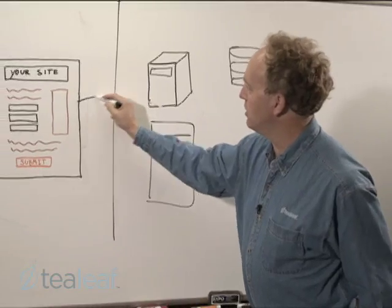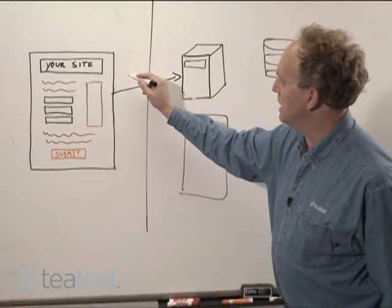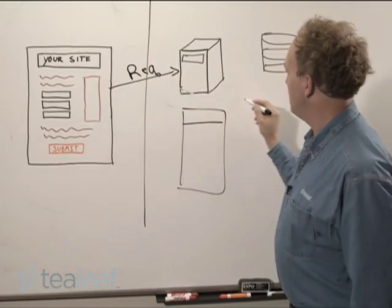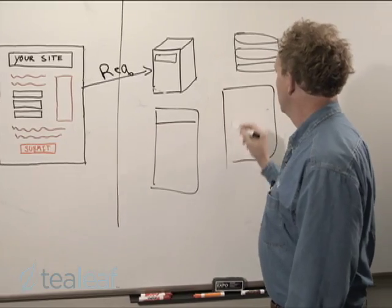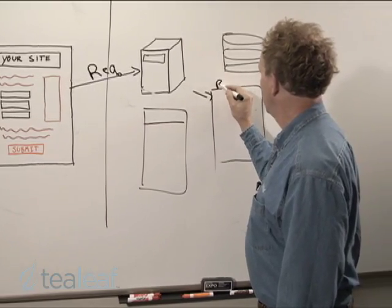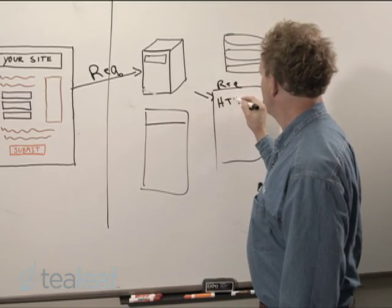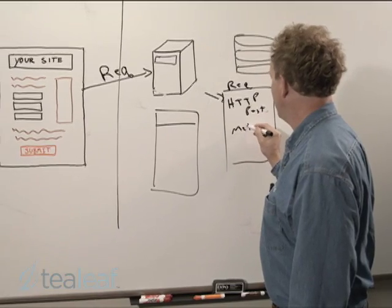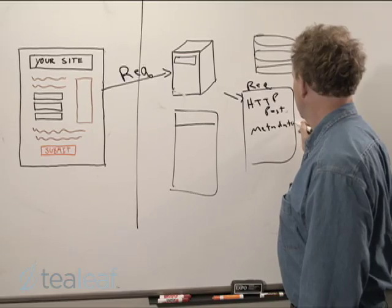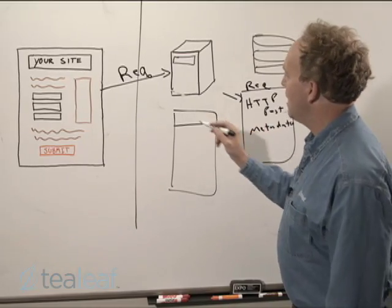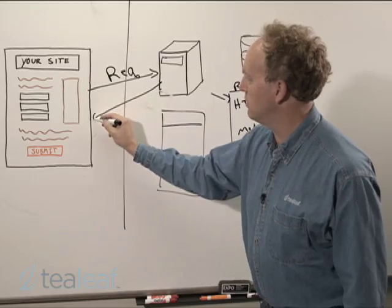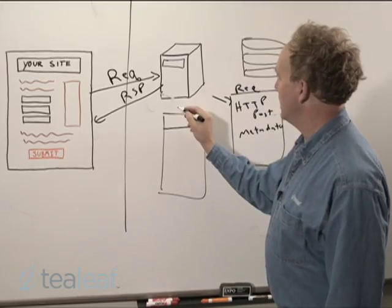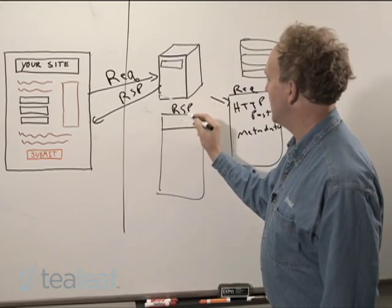As the user interacts, what they're doing is issuing HTTP requests for more information. When we capture that request, we see the request come in and we get the full HTTP post. We get the metadata and timing information about how long it took to satisfy that request. And more importantly, we're also capturing the response.